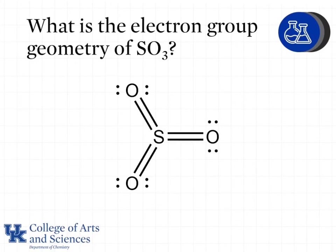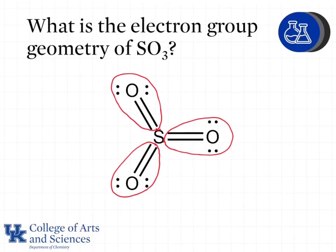What is the electron group geometry of SO3? We have three groups around the central sulfur atom, so we have trigonal planar geometry. The lone pairs on the oxygen do not affect the geometry around the central sulfur atom.